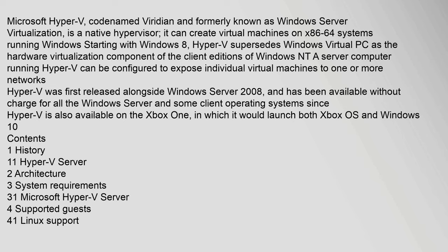Microsoft Hyper-V, codenamed Viridian and formerly known as Windows Server Virtualization, is a native hypervisor. It can create virtual machines on x86-64 systems running Windows, starting with Windows 8. Hyper-V supersedes Windows Virtual PC as the hardware virtualization component of the client editions of Windows NT. A server computer running Hyper-V can be configured to expose individual virtual machines to one or more networks.